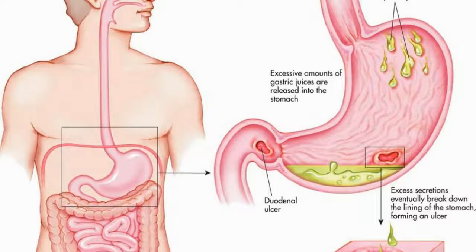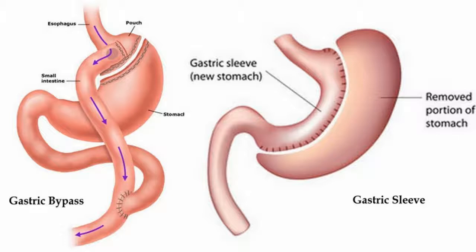Peptic ulcer includes all ulcers occurring in the stomach and duodenum. Gastric ulcer is a type of peptic ulcer. There are two types of peptic ulcer: gastric ulcer and duodenal ulcer.